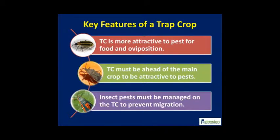The Alabama Vegetable IPM program has been evaluating trap cropping techniques for a variety of summer and winter vegetable crops. Trap cropping uses the principles of host preference and deters pest feeding from the main crop. With adequate planning and careful management, trap crops can significantly reduce damage on the main crop with reduced dependence on insecticides.